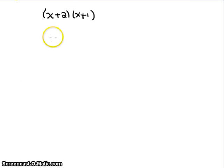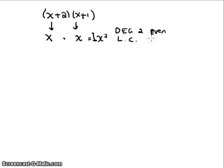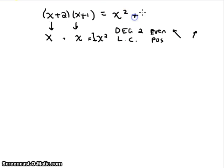If we were to graph this polynomial, we'd start by building the leading term: x times x gives us x squared. This is degree two, which is even, and the leading coefficient is positive one. That gives us ends that go up on both sides. We can recognize this as a parabola — a quadratic always gives us a parabola, so this shape makes sense.